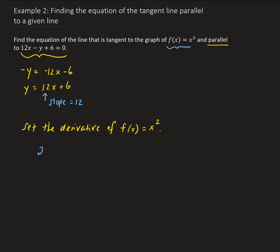So we're going to get — actually, sorry, that's x cubed, not x squared. So using the power rule, we're going to get 3x squared equals 12. Solving this, we're going to get x squared equals 4, and therefore x is going to be plus or minus 2.